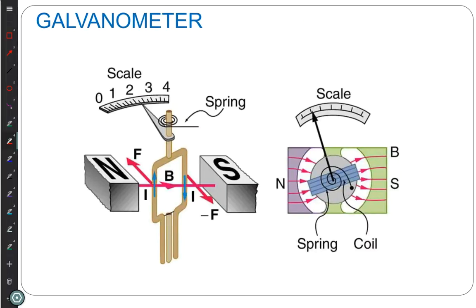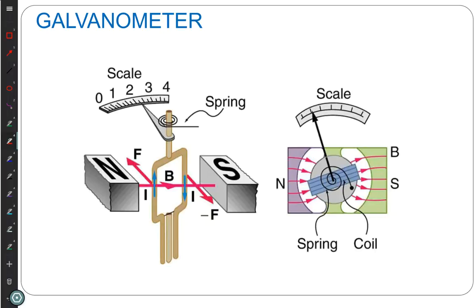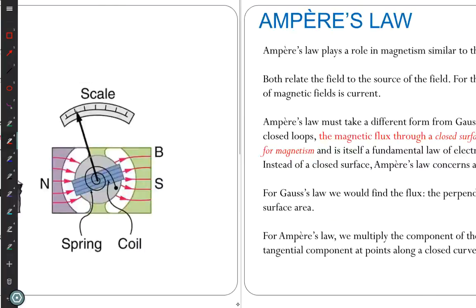Other things we can do with this: a galvanometer. A galvanometer is a device that tells you how much current is flowing. You put a spring, pass the current through a loop, and the amount it rotates will be where the spring force equals the torque. It can be calibrated to tell you what the current is as a function of angle.